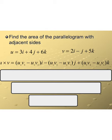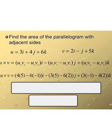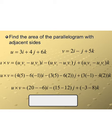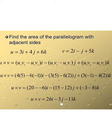We have two vectors in component form: u = 3i + 4j + 6k and v = 2i − j + 5k. Plugging into our formula using u2·v3 − u3·v2, and so on for each component, and after simplifying, we get the cross product vector 26i − 3j − 11k.